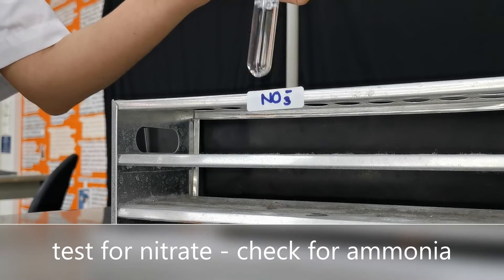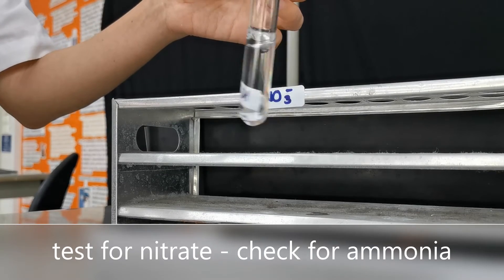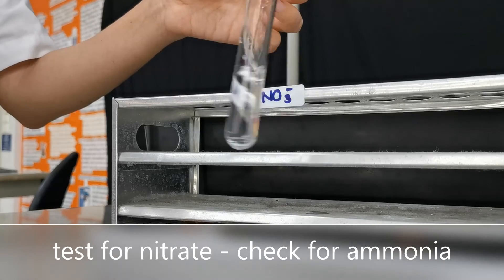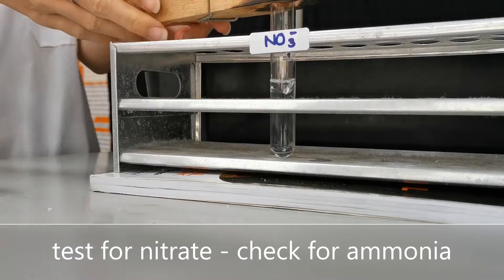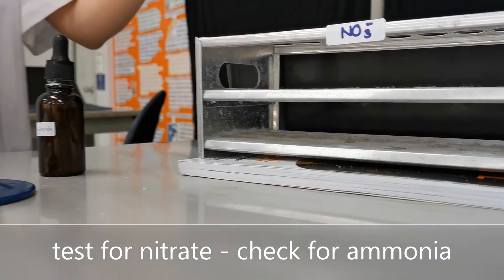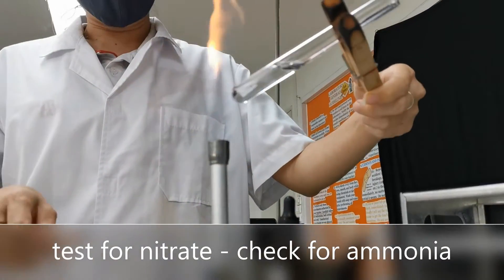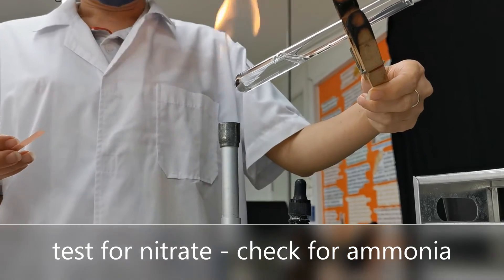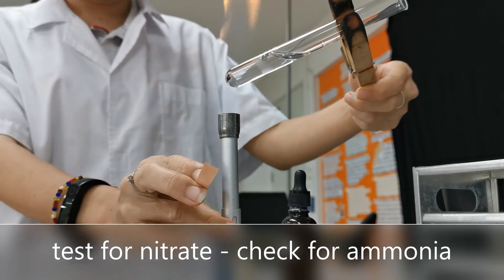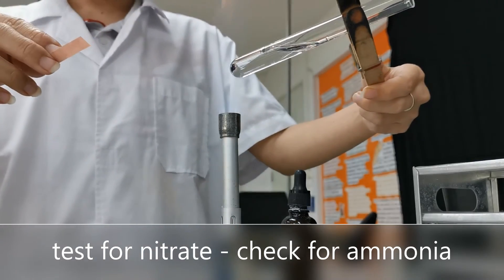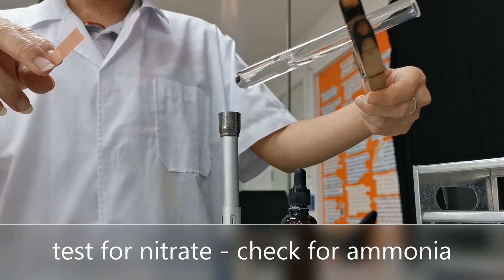We will drop in the aluminum foil. We can just shape it small enough that it can go through. Now we heat this gently, and remember, we need damp red litmus paper to test for ammonia gas.